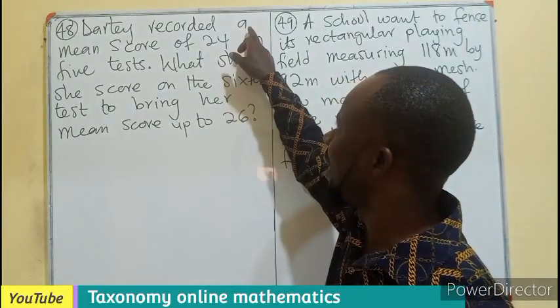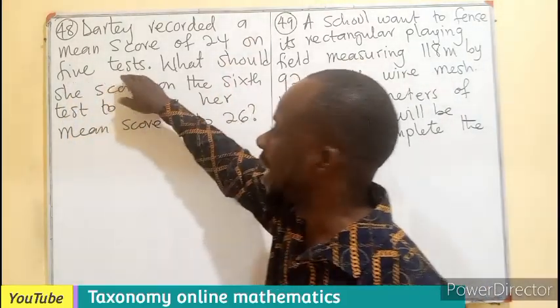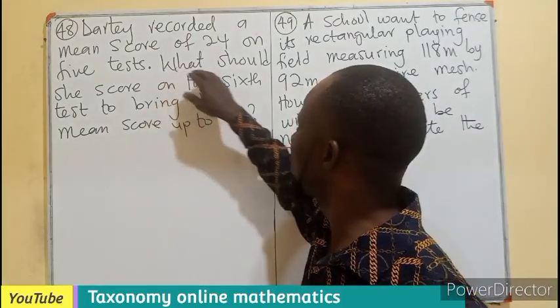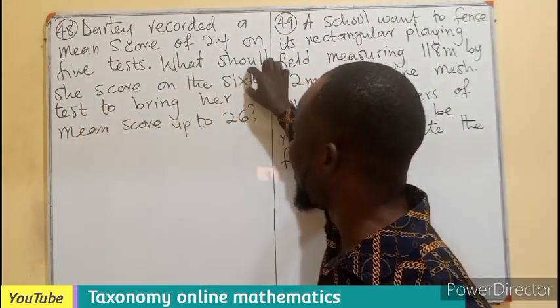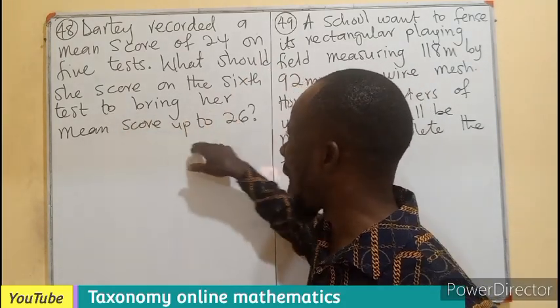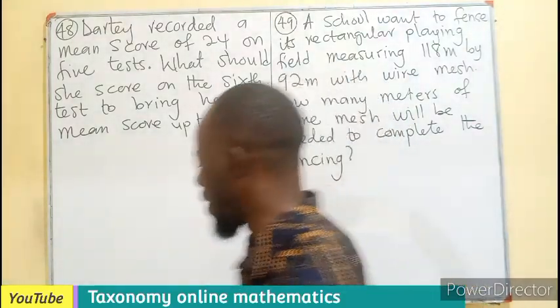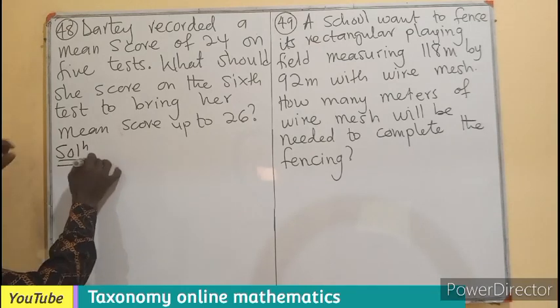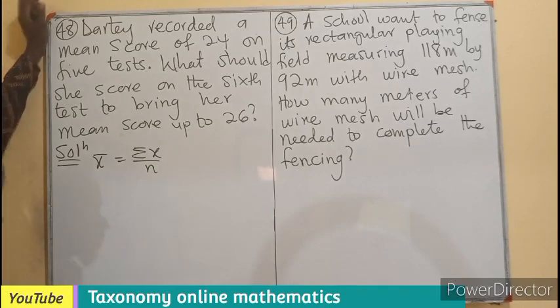Dati recorded a mean score of 24 on five tests. What should she score on the sixth test to bring her mean score up to 26? So we know that if I am taking a mean, the mean is always the sum of data over number of data.